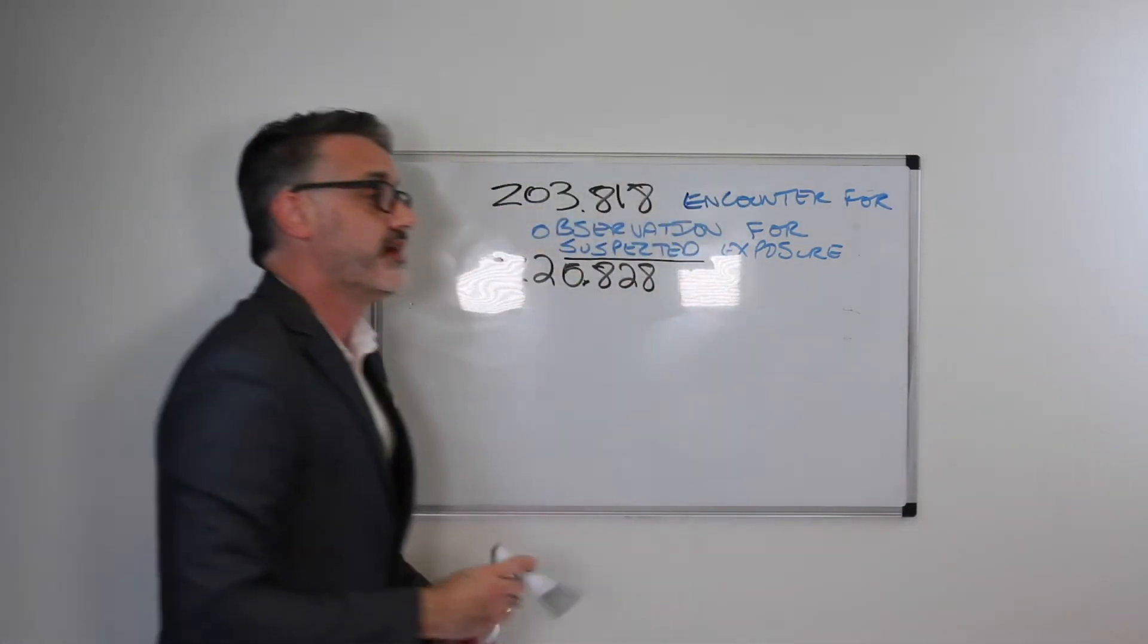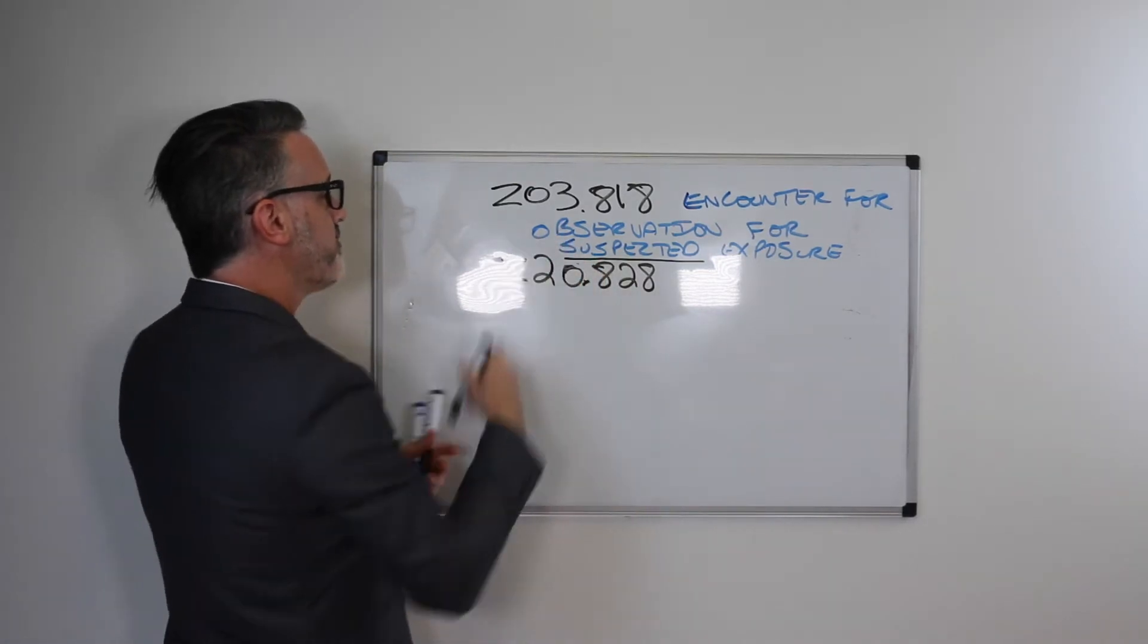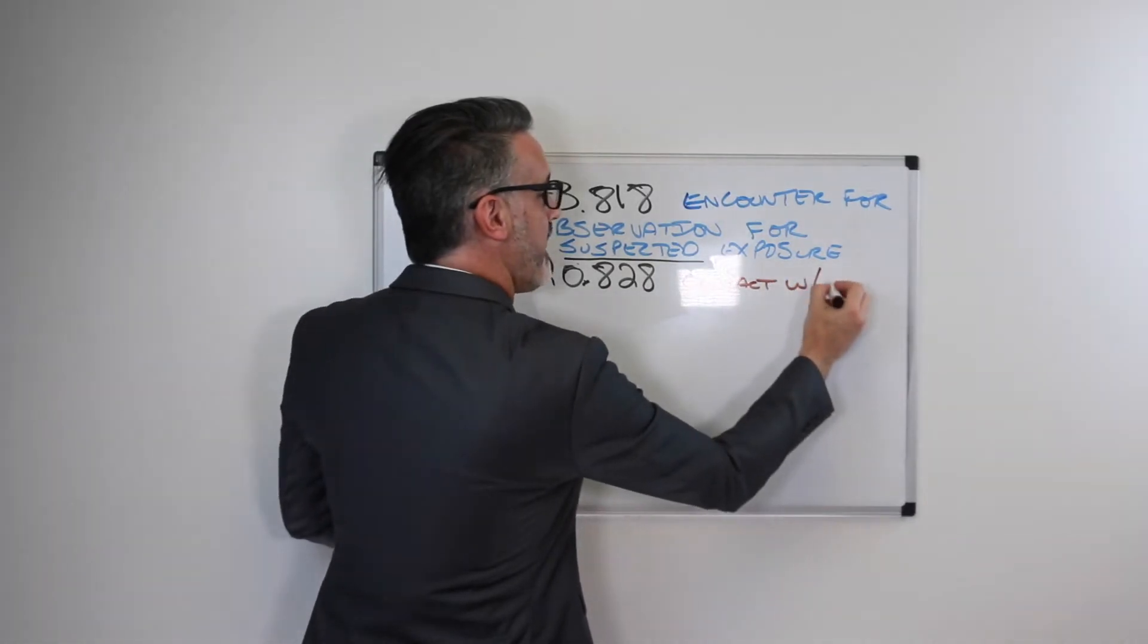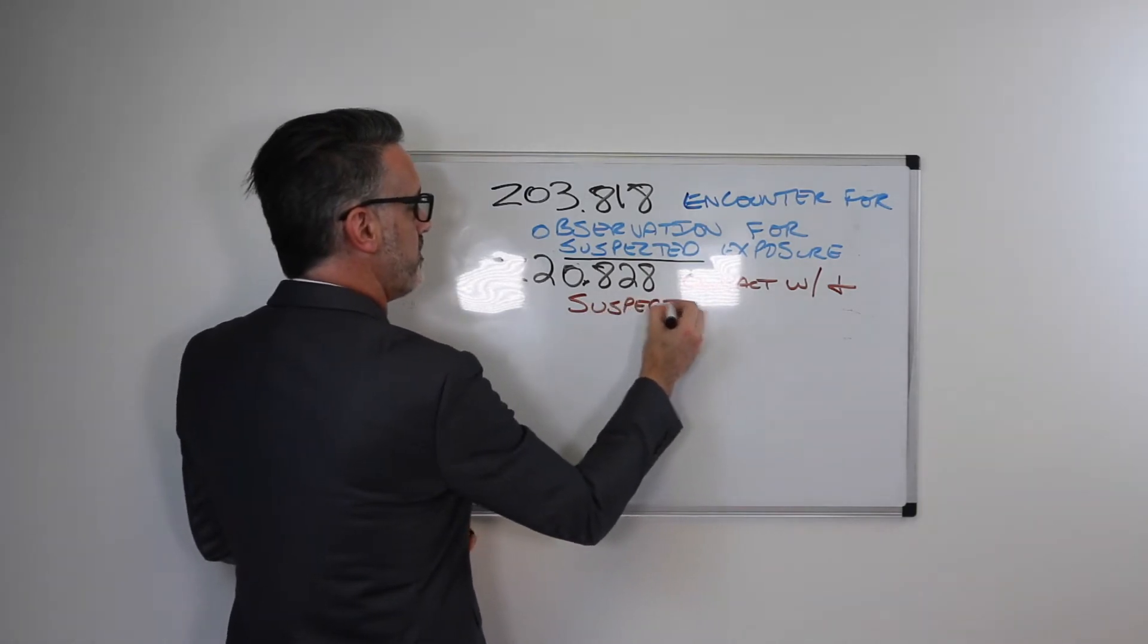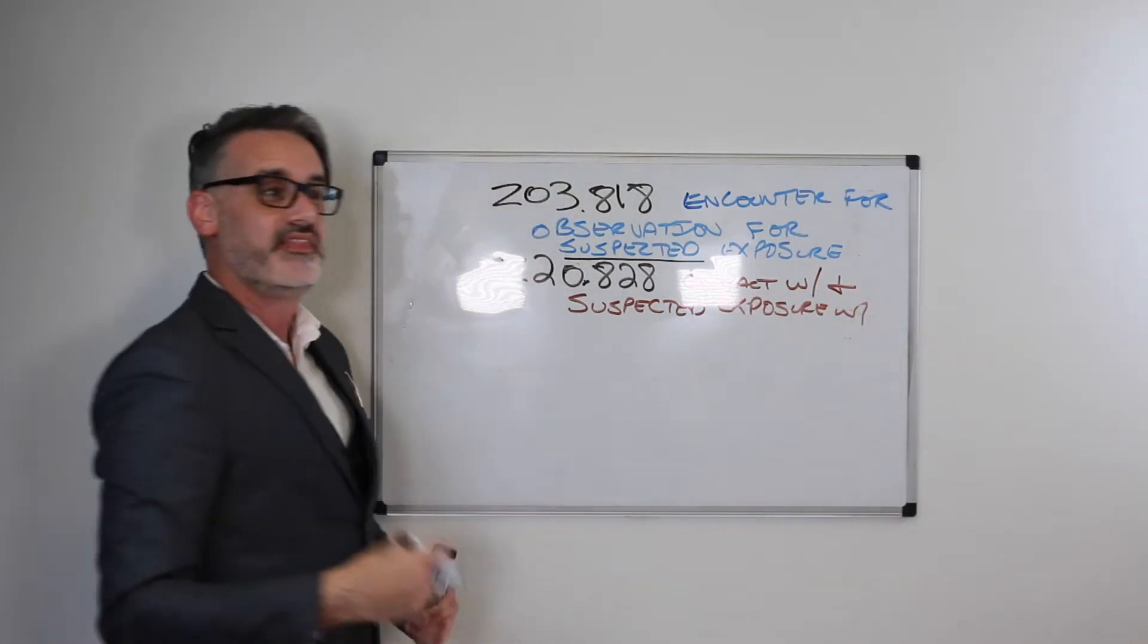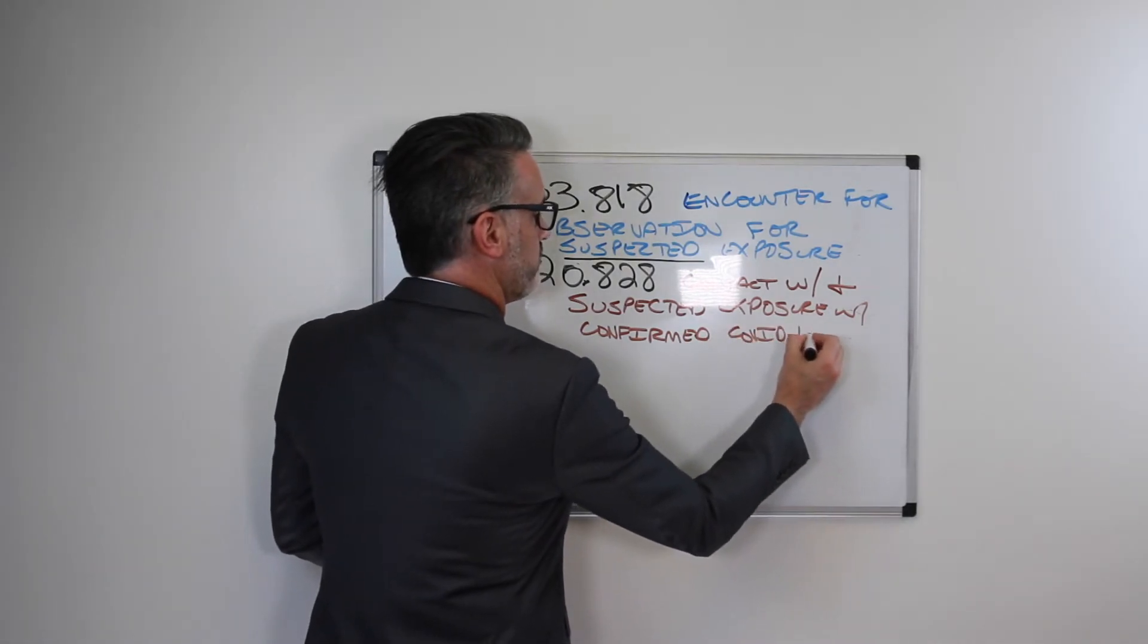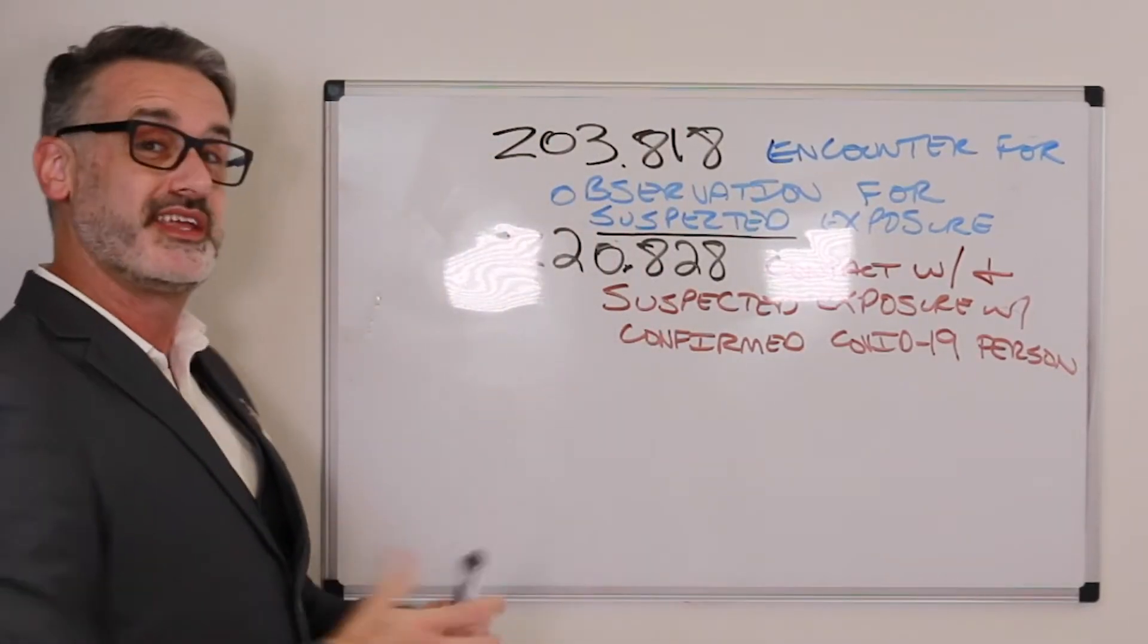And then we would also have Z20.828. So Z20.828, when the patient comes to the office, when there has been contact with and suspected exposure with someone that is a confirmed positive COVID-19 patient. And on this one, then I'm going to underline the word confirmed.